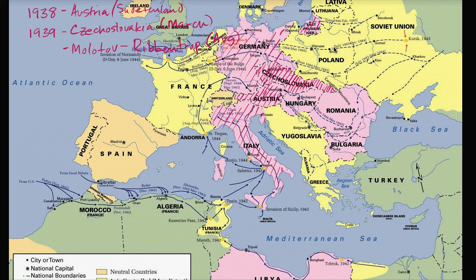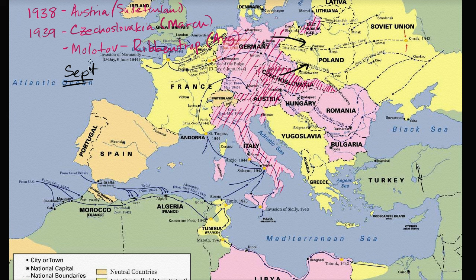And then that leads us to the formal start. In September of 1939, on September 1st, Germany invades Poland — which is generally considered the beginning of World War II. World War II starts. Everyone is declaring war on each other. Germany invades Poland, and Great Britain and France declare war on Germany.